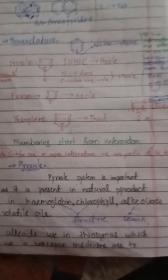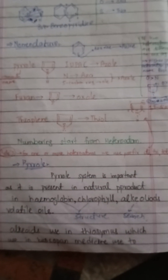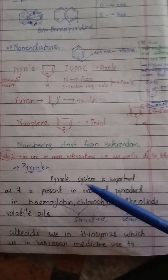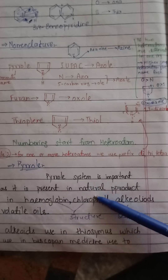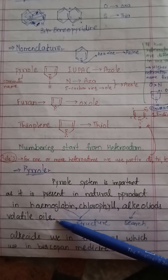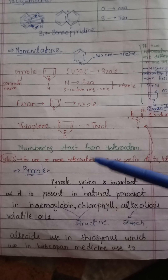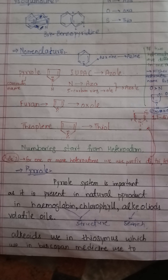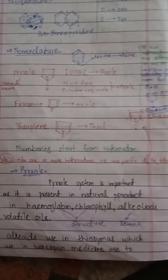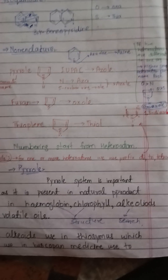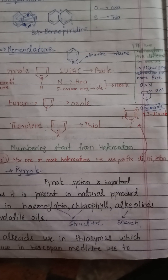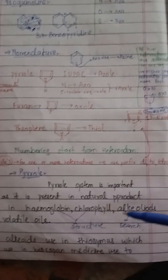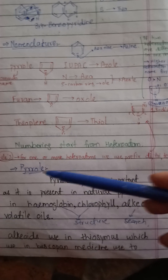Now we move to the next very important heterocyclic compound: pyrrole. The pyrrole system is very important as it is present in many natural products — for example in hemoglobin, in chlorophyll, in alkaloids, and in various volatile oils. In the hemoglobin ring structure, four pyrrole rings are attached to one another, and in the chlorophyll molecule we also have four pyrrole rings attached.